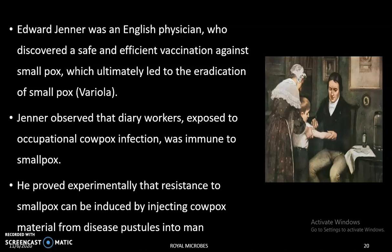Jenner observed that milkmaids who were exposed to cowpox infection were immune to smallpox. He then experimentally proved that resistance to smallpox can be induced by injecting cowpox material from diseased pustules into a person — that is, by injecting cowpox material into a person, we can make them resistant to smallpox.